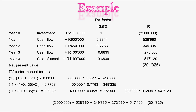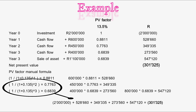For year one the cash flow was six hundred thousand rand. We times it by the present value factor: one divided by one plus zero point one three five, to the power of one, because this is year one. That gives us zero point eight eight one, and multiplying by six hundred thousand rand gives us the present value of year one's cash flow.